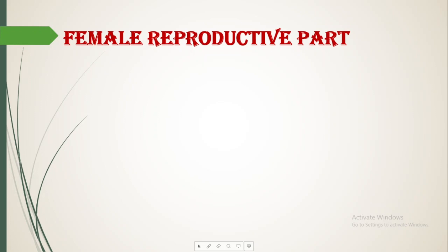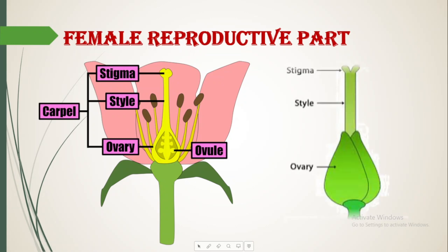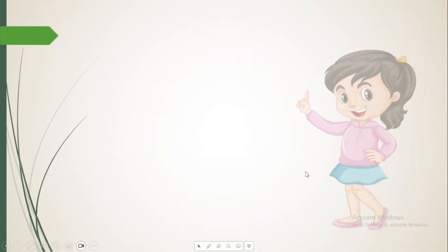Next we have the female reproductive part, which is the carpel or pistil. It is divided into three parts: stigma, style and ovary. Inside the ovary we have small structures known as ovules. So altogether, stigma, style, ovary and ovules form the carpel, which is the female reproductive part. As you can see in the image, it contains stigma, style and ovary.